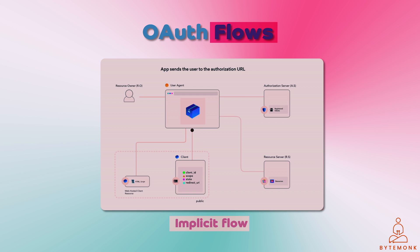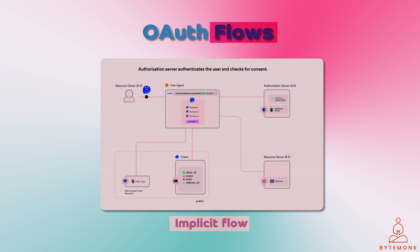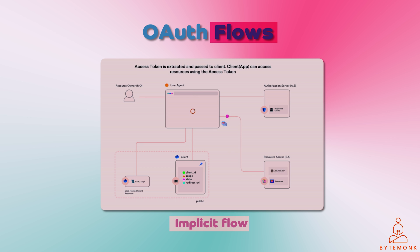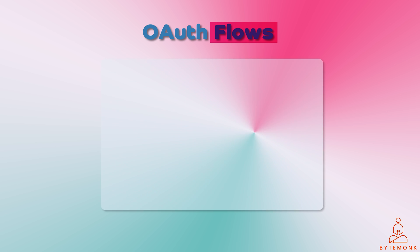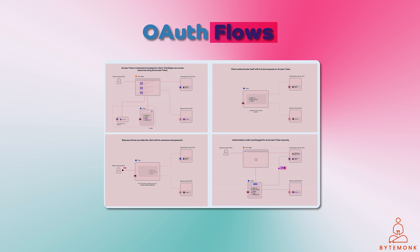Implicit flow is a simplified version of the authorization code flow. The authorization server redirects the user back to the application with an access token directly in the URL. The application can then use the access token to make requests to the resource server. However, implicit flow is not as secure as the authorization code flow and is not recommended for most applications. The OAuth 2.0 framework provides a variety of flows to meet the needs of different applications, and the best flow depends on the specific application and its requirements. There is no official OAuth 3.0 specification yet, but OAuth 2.0 remains the de facto standard for web application authorization and is likely to continue evolving.